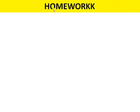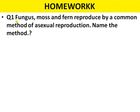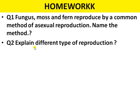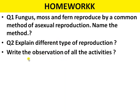Next is the homework for this lecture. First question: a fungus, moss, and fern reproduce by a common method of asexual reproduction — name the method. Second question: explain the different types of reproduction — asexual and sexual reproduction; define only asexual reproduction. Third: write the observations of all the activities in your fair notebook. This is it for this video. Hope you have understood. Thank you and have a nice day.